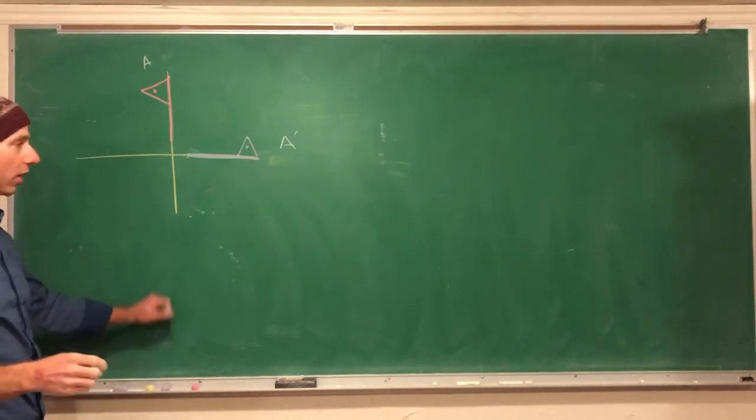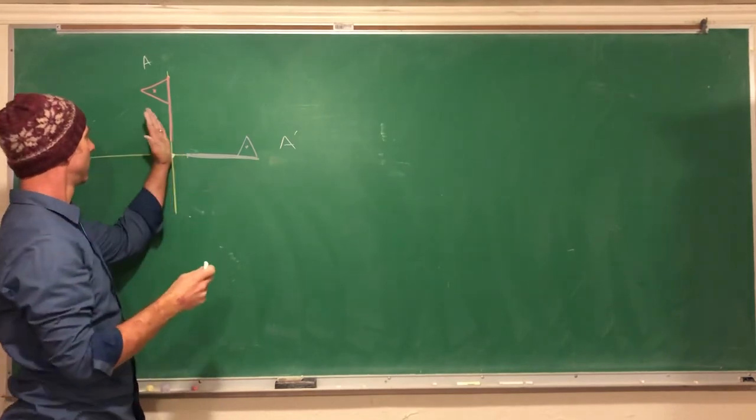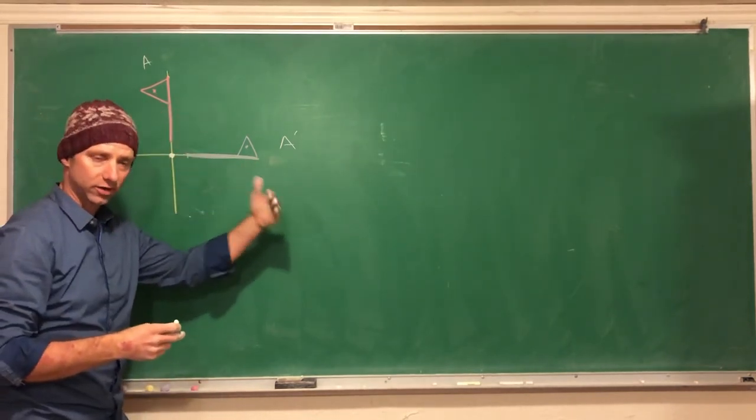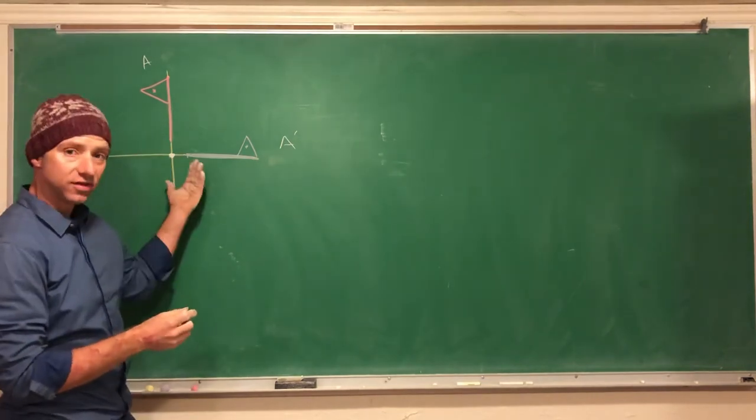So what we know so far is our rotation is about here, about the origin, and I went 90 degrees clockwise. Now I want to know what the rule is going to be, so let's figure out a rule for this one.